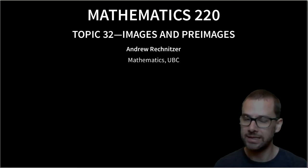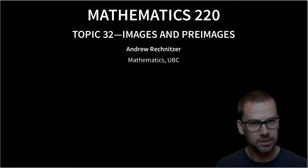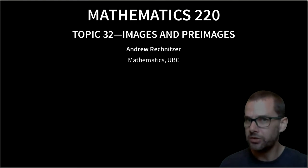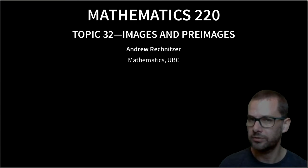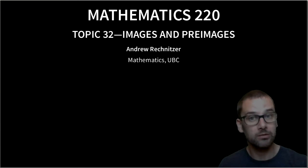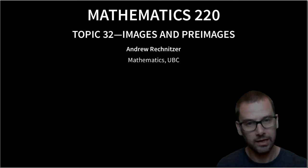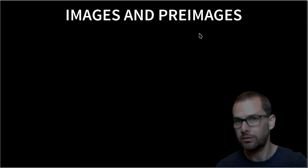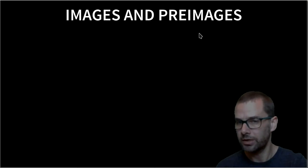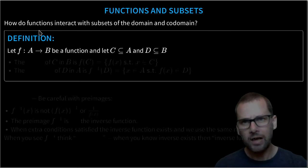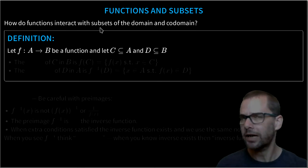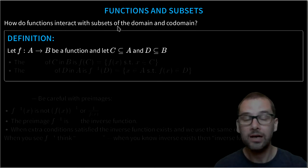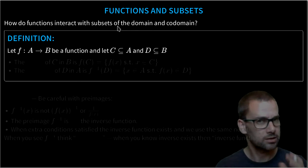Because we define functions as a special type of set, we can ask how this new thing we've defined interacts with other things we do with sets. This is why we're going to look at the topic of images and pre-images — specifically, how functions interact with subsets of the domain and then with unions and intersections.